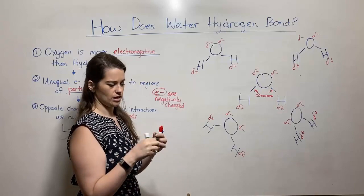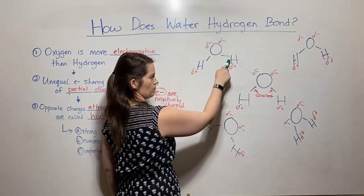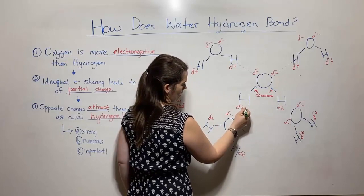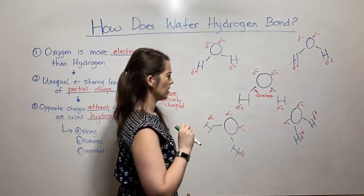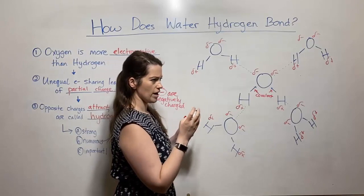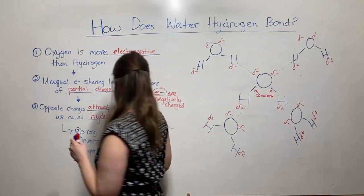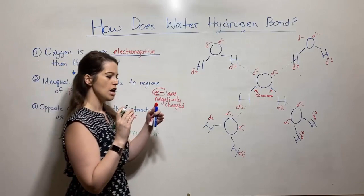I'm going to draw the hydrogen bonds as green dashed lines. I've got one here between the partial negative of this oxygen and the partial positive of this hydrogen; one here between the partial negative of this oxygen and the partial positive of that hydrogen; one here between this oxygen and this hydrogen; and one more between this oxygen and this hydrogen. The covalent bonds are intramolecular — within a molecule — while these hydrogen bonds are intermolecular, meaning between atoms of different molecules.